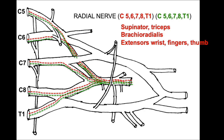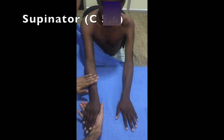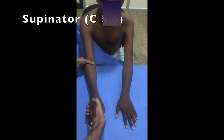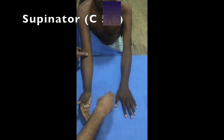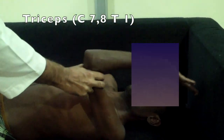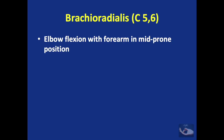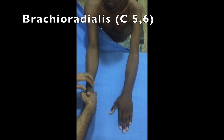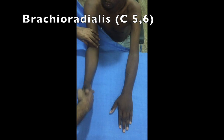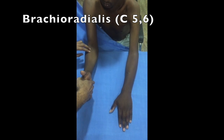The radial nerve is evaluated by examining the supinator, triceps, brachioradialis, and extensors of the wrist, fingers and thumb. When testing the supinator, the biceps must be kept elongated — that is, the elbow must be kept extended — and the patient asked to forcefully supinate the forearm against resistance. For the triceps, elbow extension must be tested against gravity. When testing the brachioradialis, elbow flexion must be tested with the forearm in mid-prone position; the brachioradialis muscle can be palpated and seen becoming prominent during this maneuver.